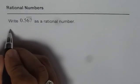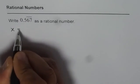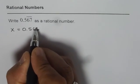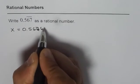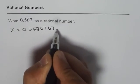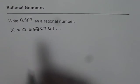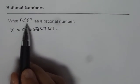So let this be equal to x. We can write this as x equals 0.5 with 67 repeating, like this. So 67 repeats. So let the rational number be x, which represents this number.